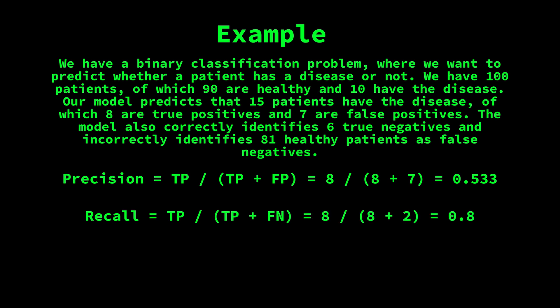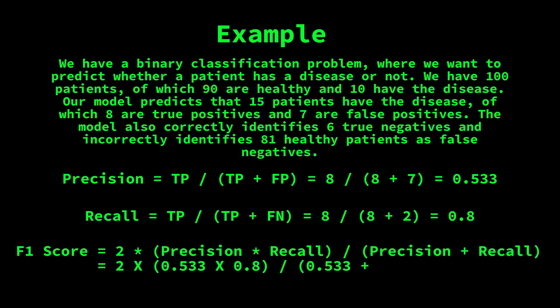Using these values, we can calculate the F1 score: F1 equals 2 times 0.533 times 0.8, divided by 0.533 plus 0.8. In this case, our model has an F1 score of 0.64, indicating that it has room for improvement in its classification accuracy.